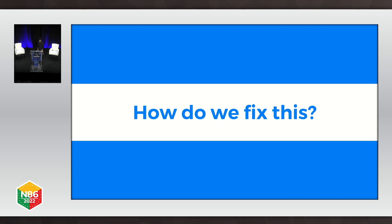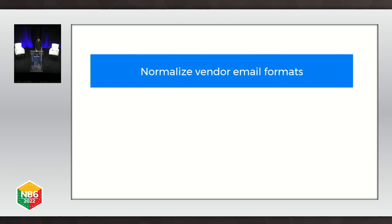Let's talk about how we fix this. First, the maintenance parser normalizes vendor formats. We have a standard parsing logic which we try to onboard vendors to. If we can't, we write custom parsers for them and try to match it. This gives us some success — a lot of times we are able to parse it and we have a decent automation scheduling success rate. But any changes in vendor format result in escalations again.